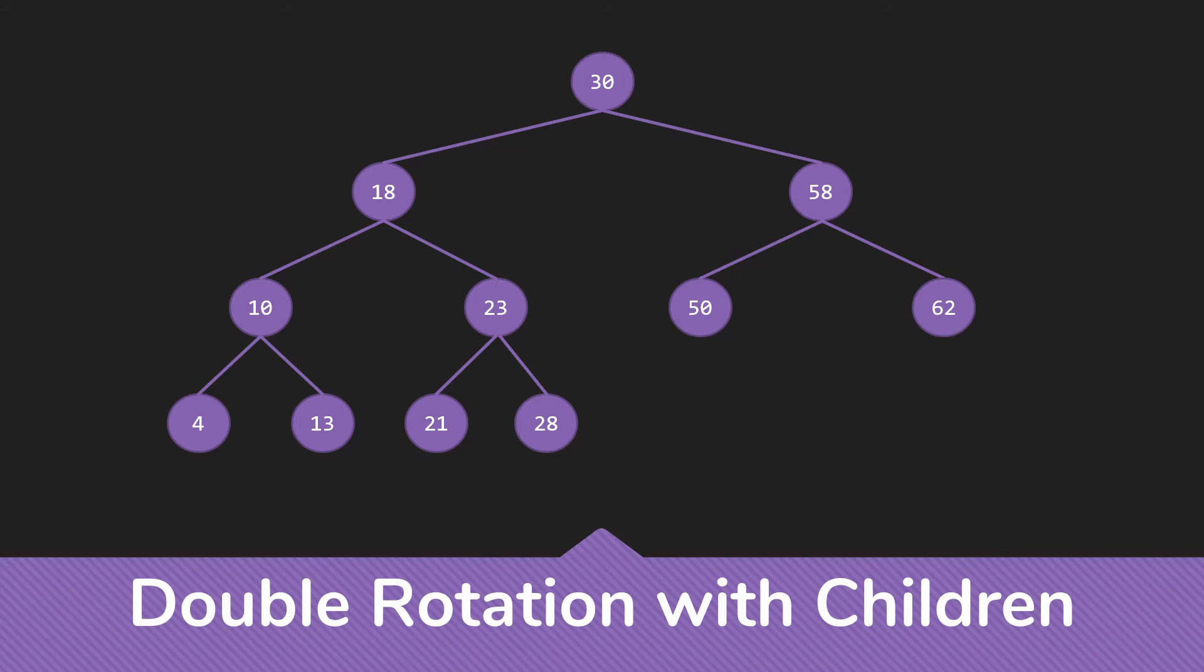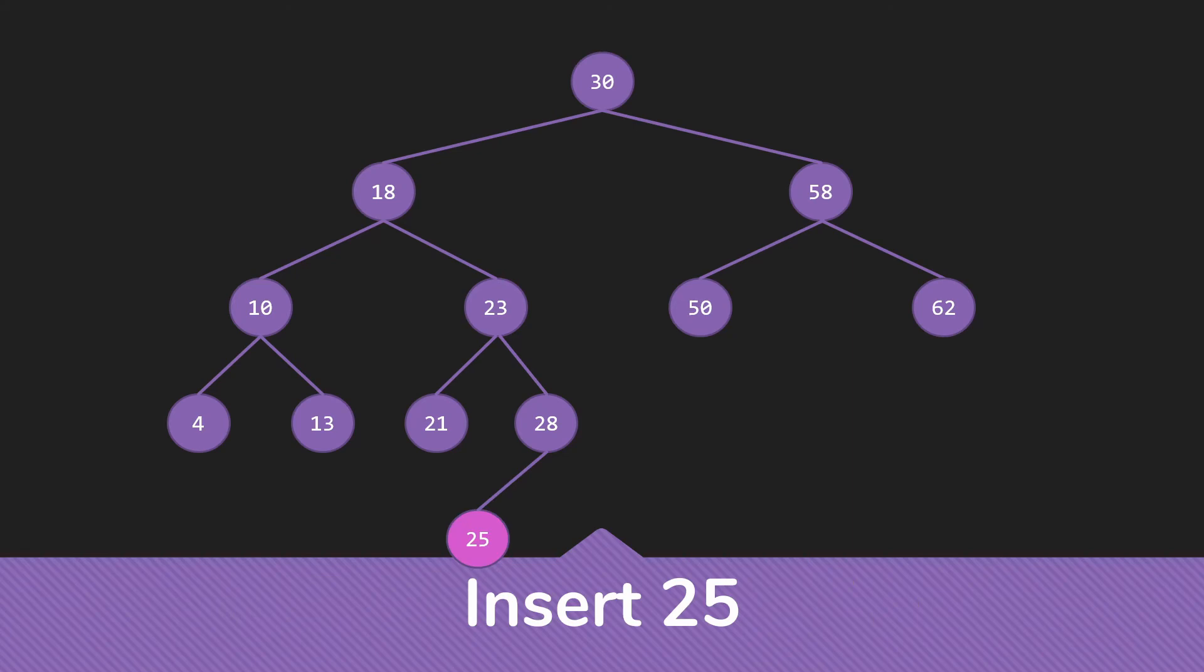So now let's look at the same scenario, but set it up so that we're doing a double rotation with children. So once again, we're going to add something. So we're going to need to rotate with the 30. But this time, we're going to make that happen so that we need a double rotation. So to make that happen, we're going to insert the 25. And then we're going to check our balance factors. So once again, the leaf is fine. Its parent is fine. 23 is fine. The 18 is fine. But the 30, once again, is not fine.